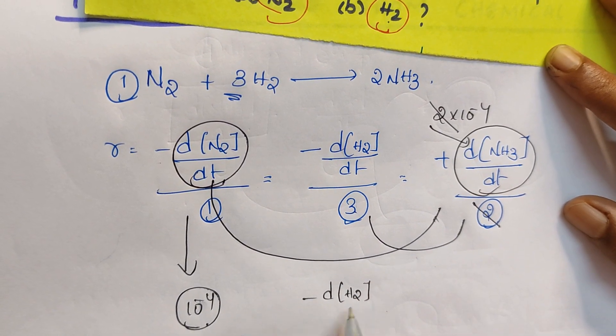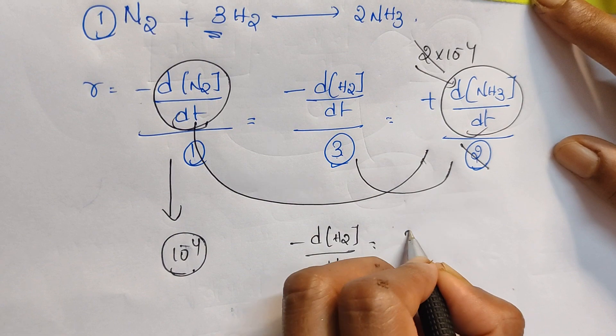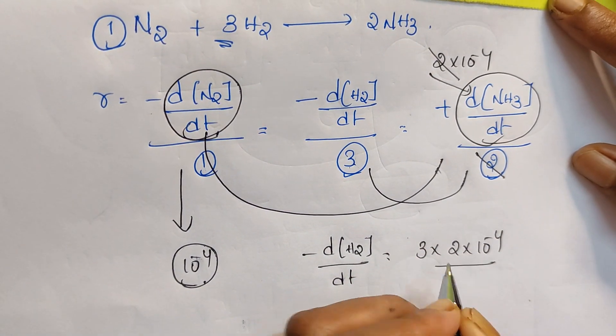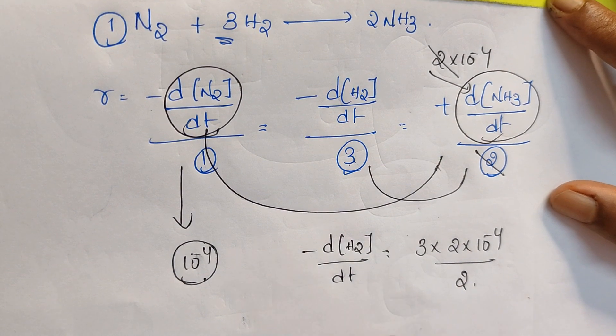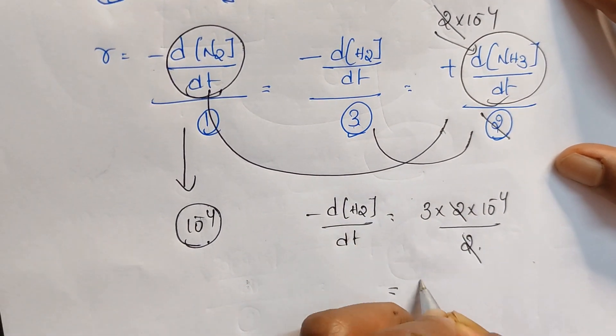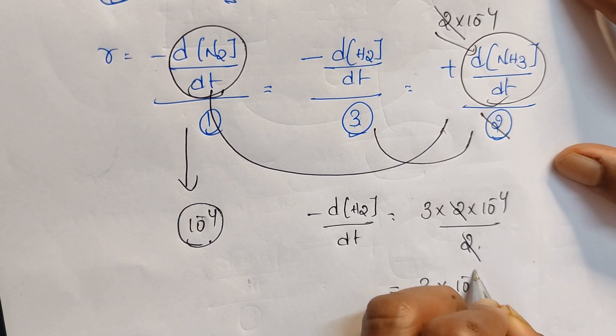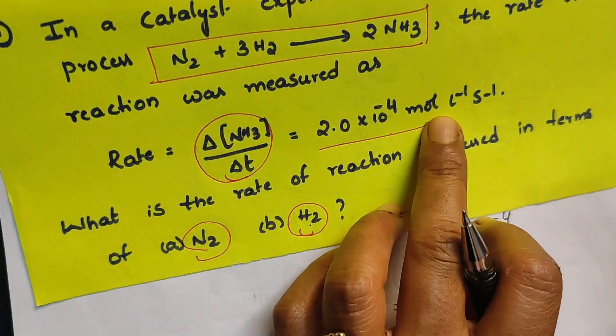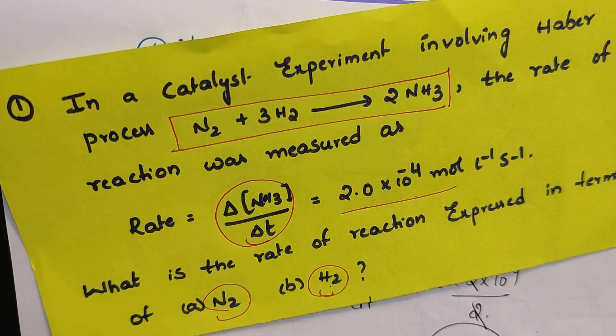And coming to the hydrogen, these two expressions you need to take. Minus d of H2 by dt is equal to, if you move this 3 goes this side, already 2 into 10 power of minus 4 you substituted and divided by 2. 2 and 2 will be cancelled, 3 into 10 power of minus 4 is your answer. Whatever the units is given in the question, you can check it out that option and tick it.